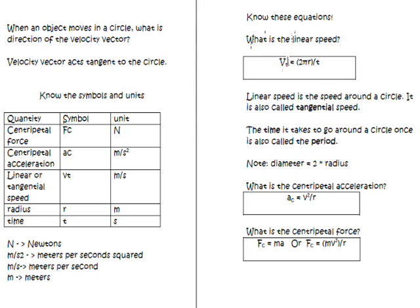Alright, so here's some equations that we need to know about moving around the circle. Here's our first one. What is linear speed? We know that speed is distance divided by time. Where does the 2 pi r come from? The distance around the circle is your circumference and the circumference of a circle is 2 pi r. Here's a derivation of that. 2 pi r divided by t gives you your linear speed. It's also called the tangential speed.